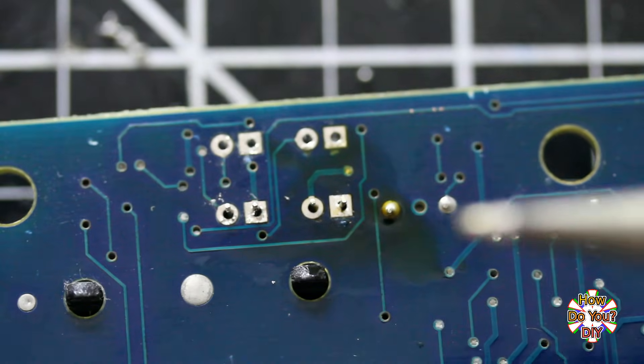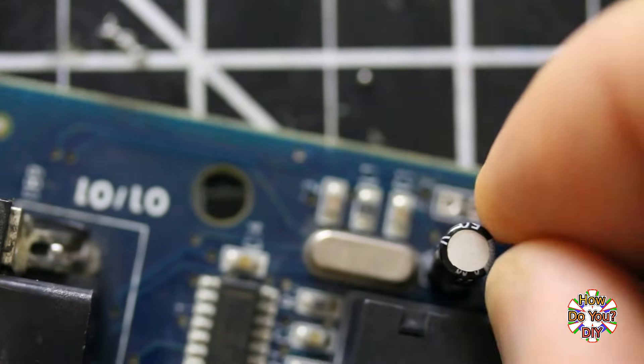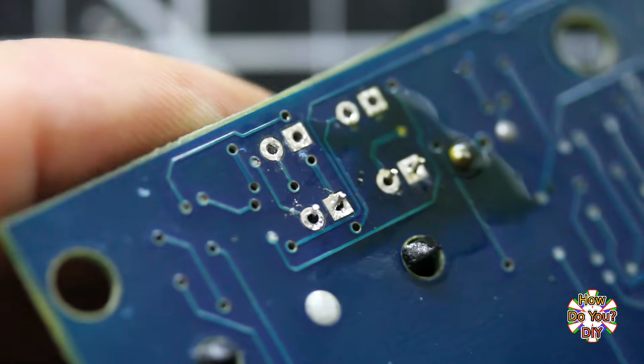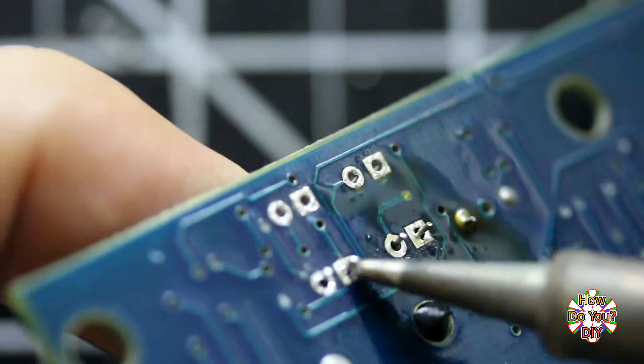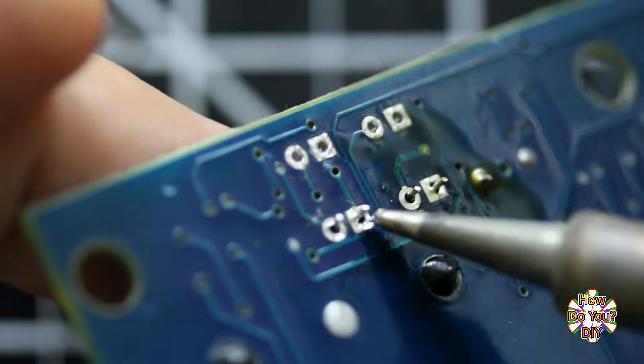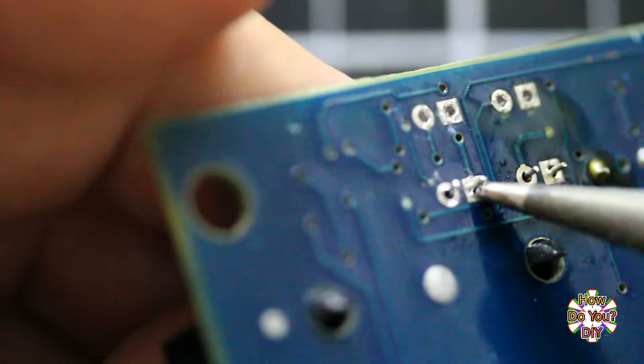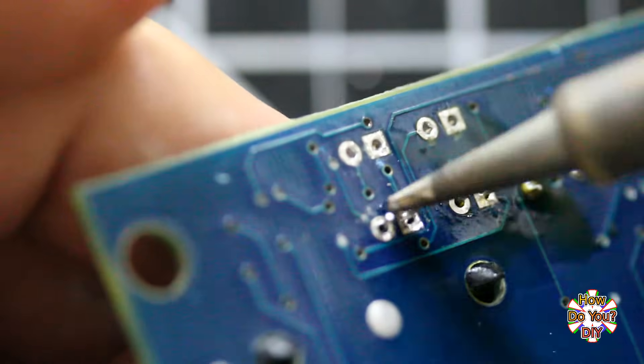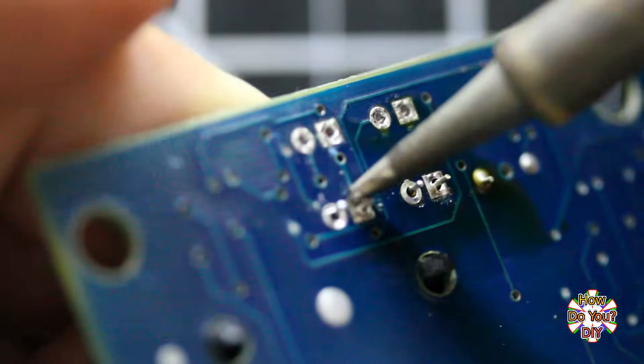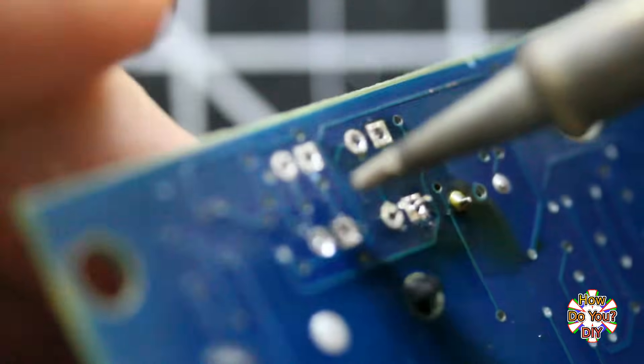For both of these methods of removing solder, they do not remove 100% of the solder, so the part will probably still be stuck in place. You can see here that the leads are stuck to the sides of the holes. I've found that you can use your soldering iron to heat up the leads and push them loose. This helps to finish removing the part.